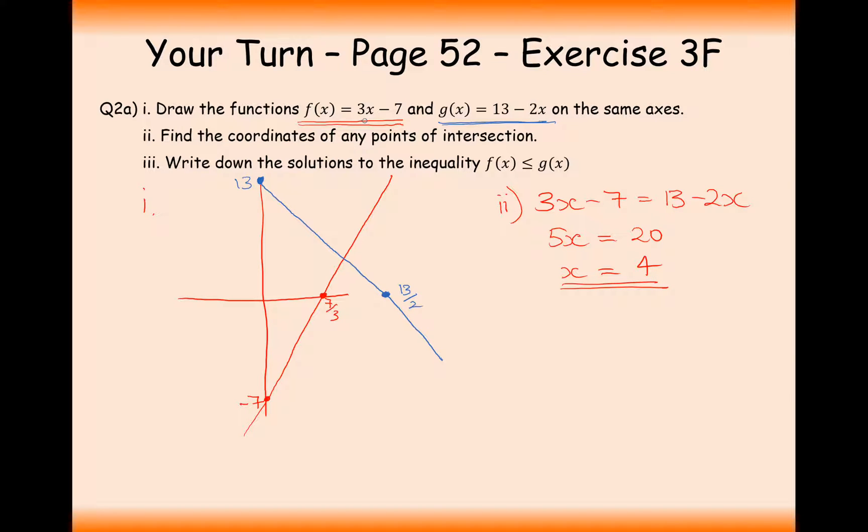We get the answer of 4. Remember, we're finding a coordinate, so we need to plug in the x value back in to find the y coordinate. f(4) is going to be 12, take away 7, which is 5. Therefore, the answer to this question is (4, 5).